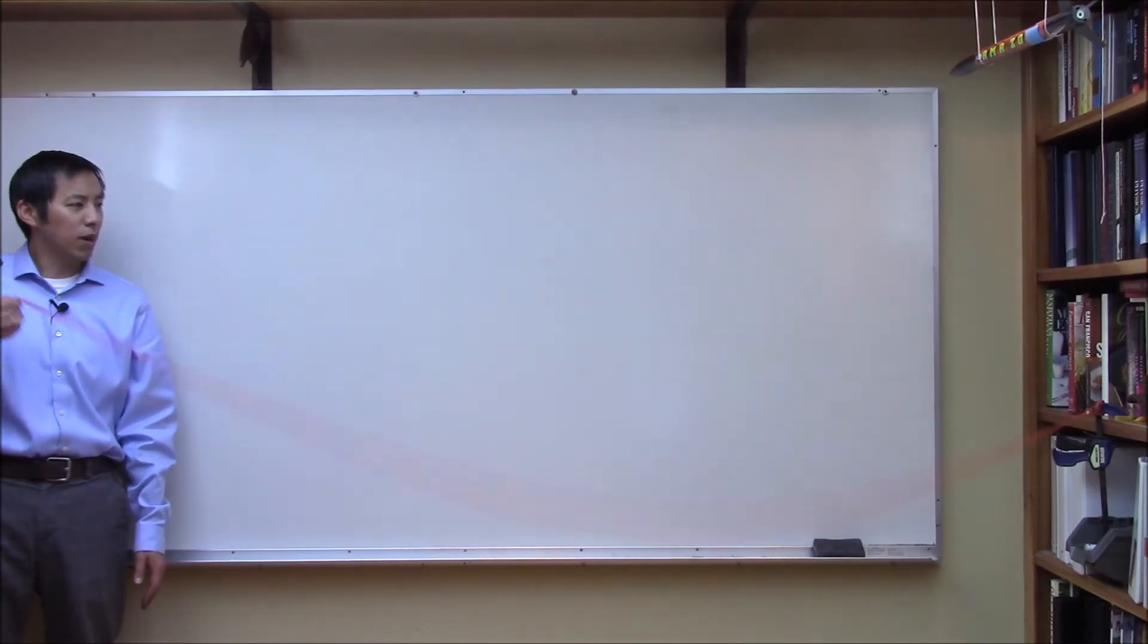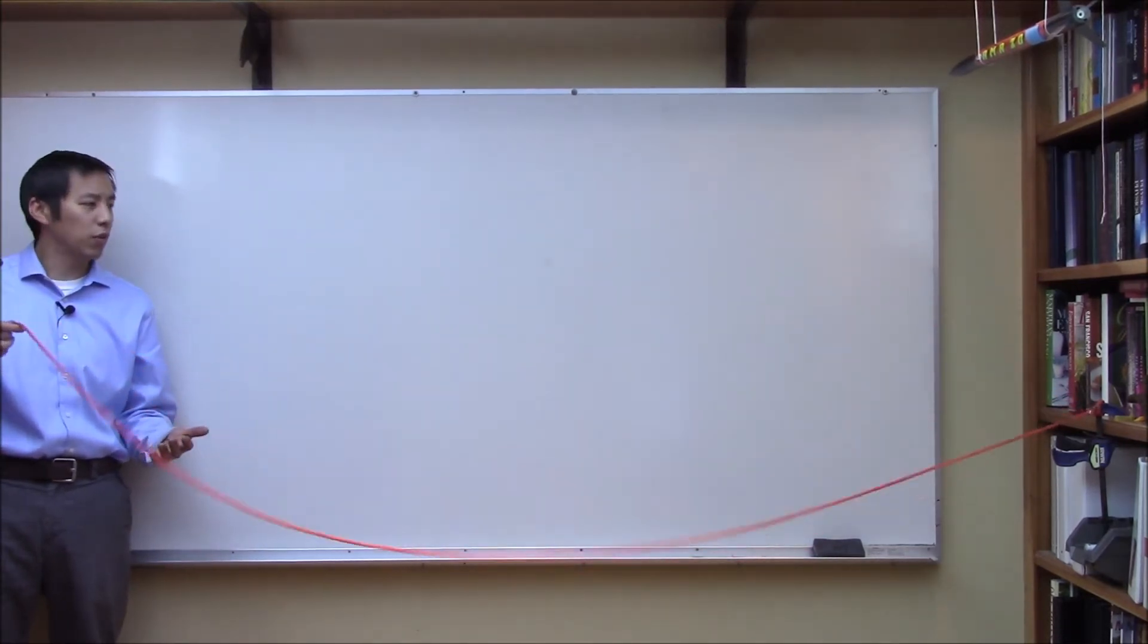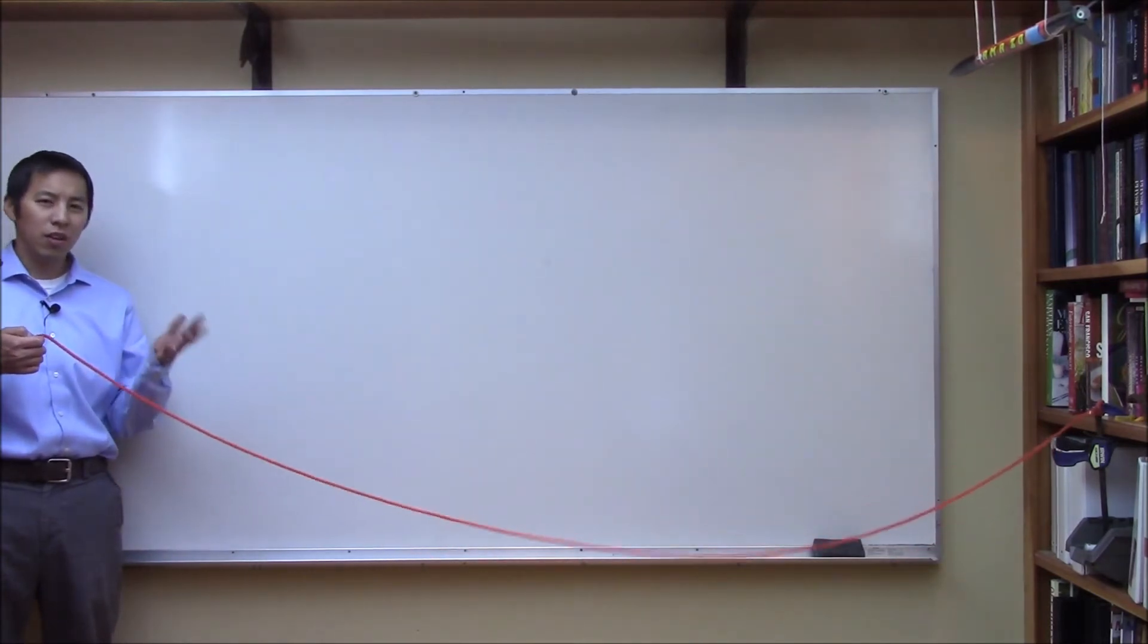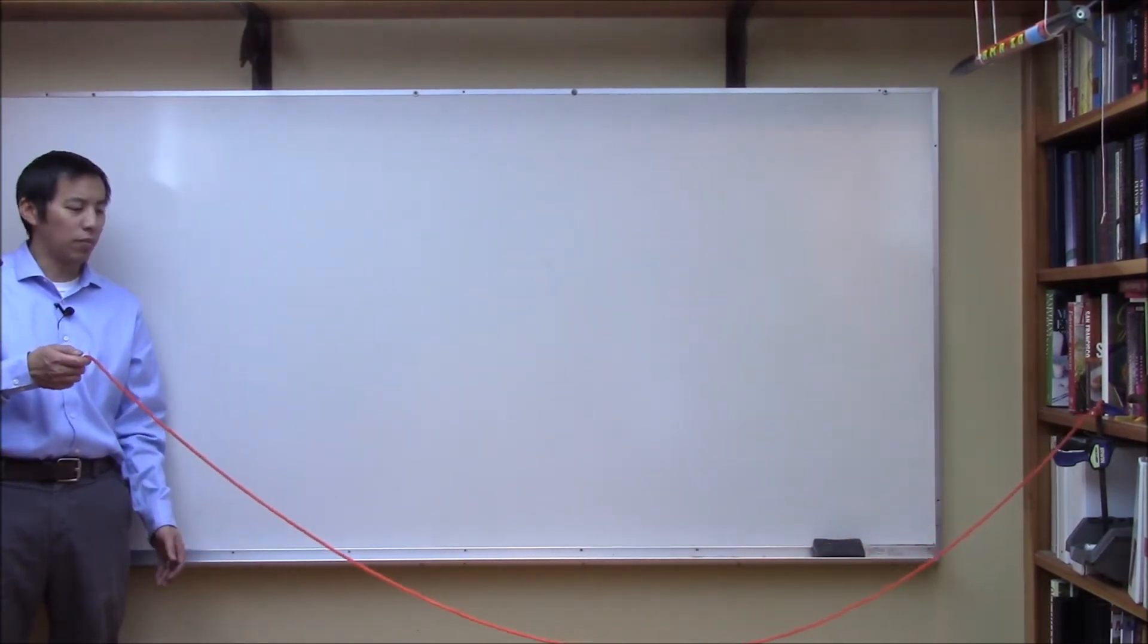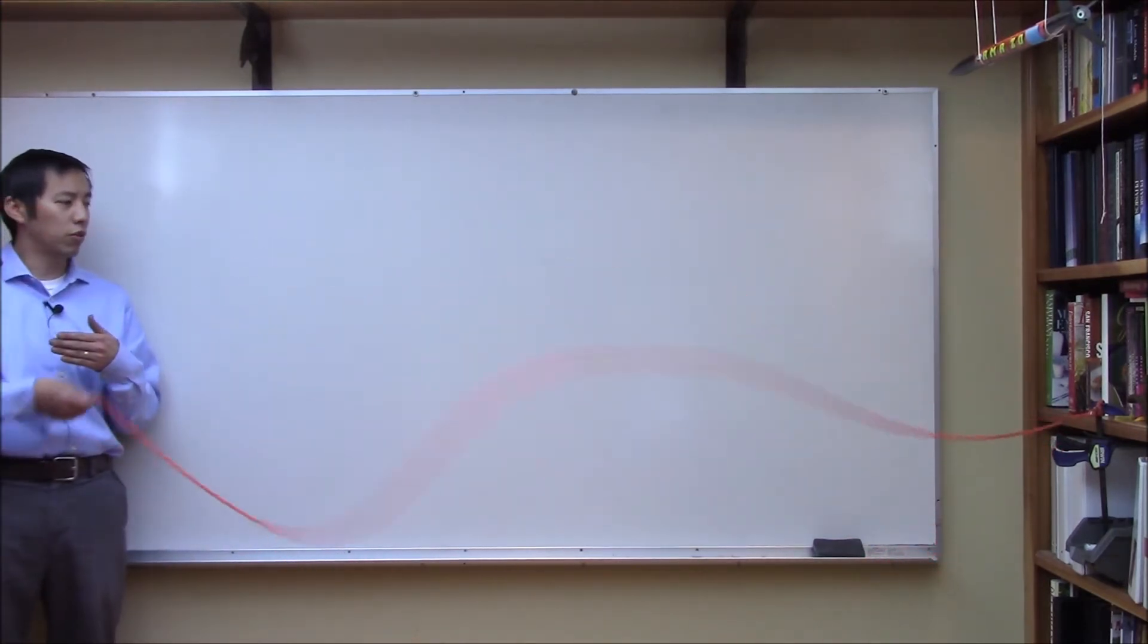Now what's interesting about this system is that if I increase the frequency of oscillation, let's see if we can get another mode to show up in this standing wave. Earlier in this current case, if we go slowly there's two nodes, one in my hand and one at the far side.